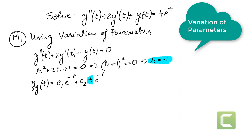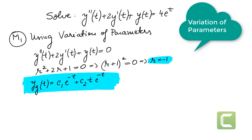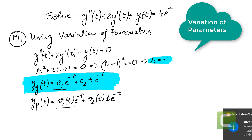We keep this homogeneous solution handy as we'll need it. Once we found the general solution, it also helps us figure out the shape of the particular solution. The particular solution y_p(t) has the form v1(t)·e^(-t) + v2(t)·t·e^(-t). Every constant c1 is replaced by a function v1(t), and c2 is replaced by v2(t). This is the procedure for variation of parameters.